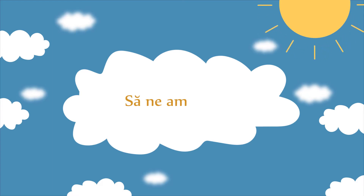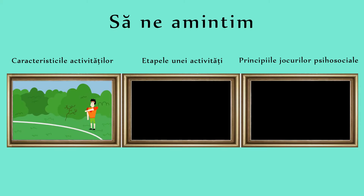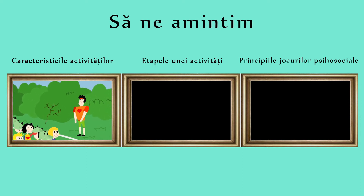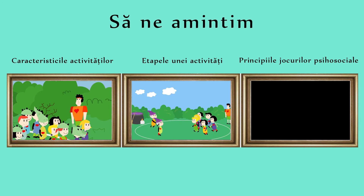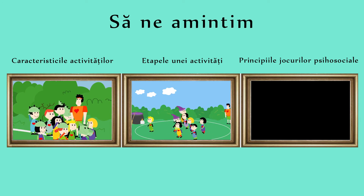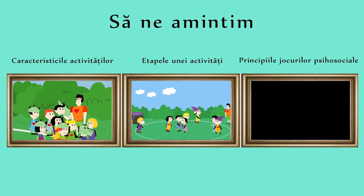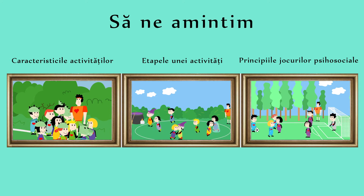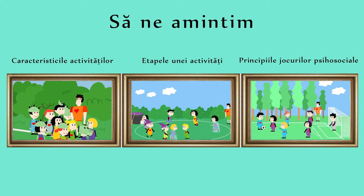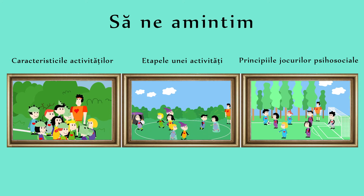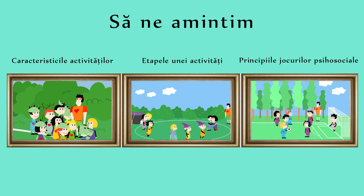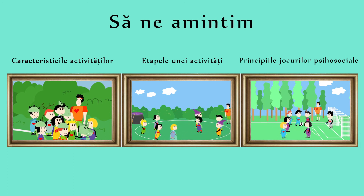Let's remember. The characteristics of the psychosocial game: any psychosocial game has a scope, rules, roles and a frame. The planning of a psychosocial activity includes three important phases: warm-up, main part and relaxation. The six methodological principles are: objectives, cooperation, three steps of learning, progression, variety and creativity, and active participation.